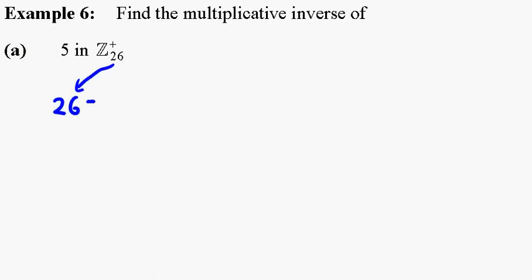So let's try and find the greatest common divisor. So 26 is equal to 5 times 5 plus 1. So these numbers came from the 5 and 26 over here.